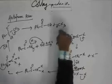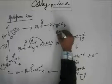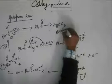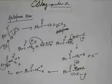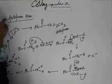Now, CHX3 is called haliform. If it is chlorine, it will be called as chloroform, bromine, bromoform, iodine, iodoform. In general, it's called haliform and that's why the name of the reaction, haliform reaction.